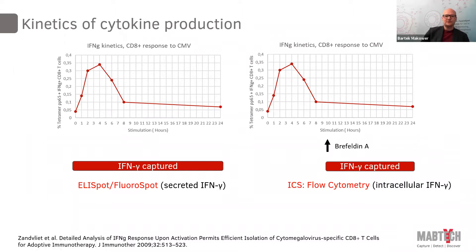If we use ELISPOT or FluoroSPOT, we will capture all the interferon gamma — all the area under the curve. While if we use flow cytometry and stop with Brefeldin A after 10 hours, we will miss the peak. This is a problem, especially looking at several cytokines simultaneously in flow cytometry. The kinetics of each cytokine has to be studied, and you have to find some kind of middle way when to stop to capture the maximum amount of each cytokine.